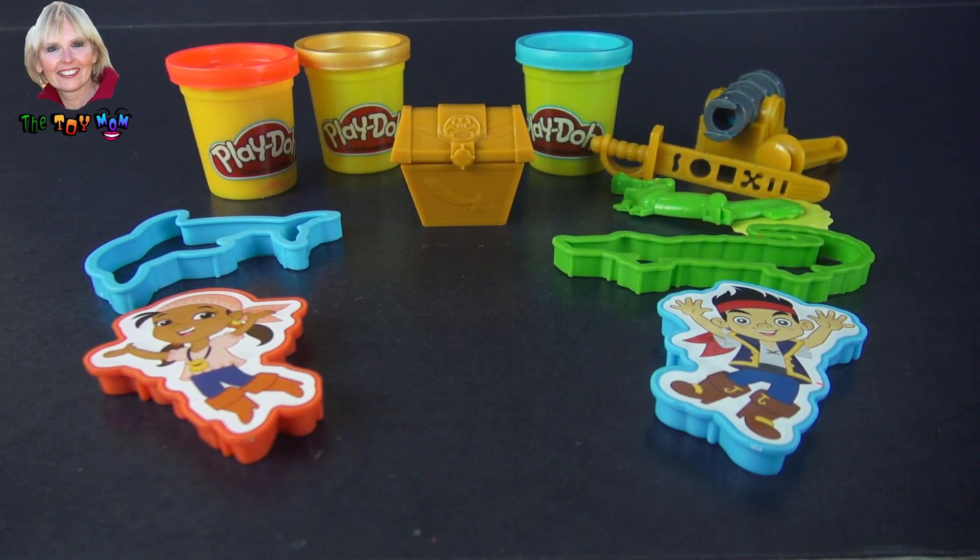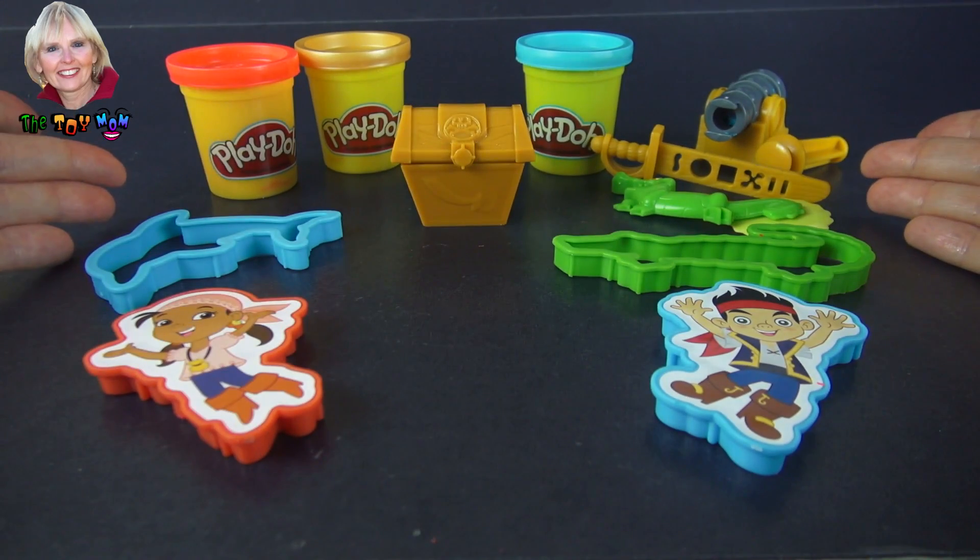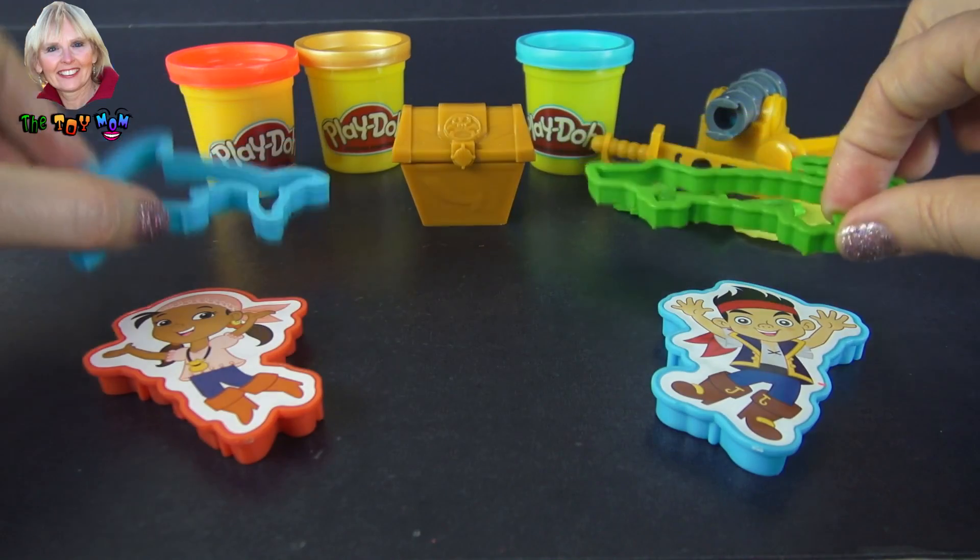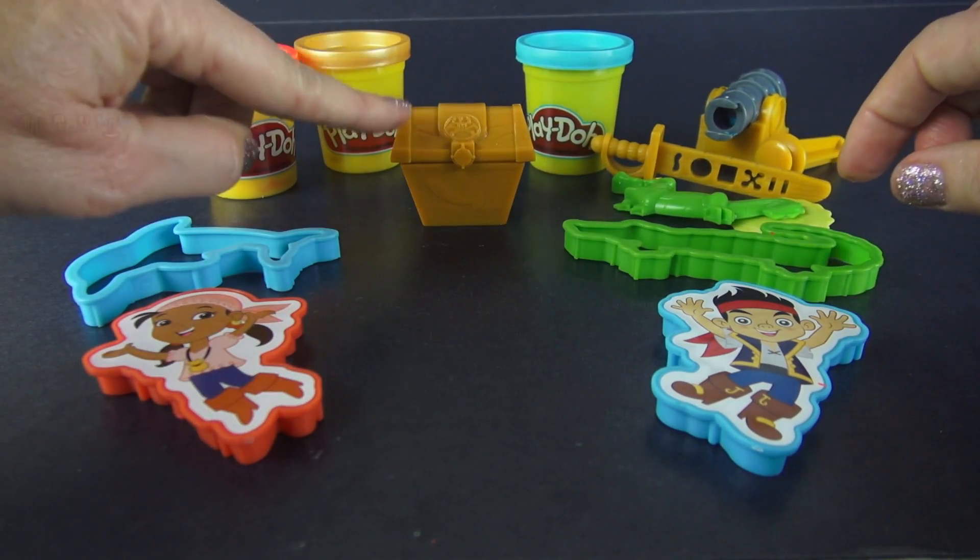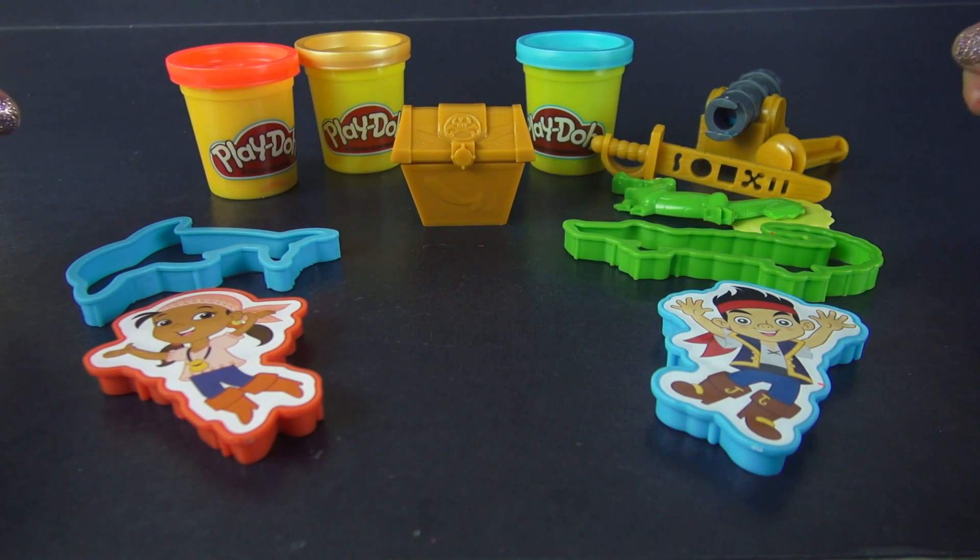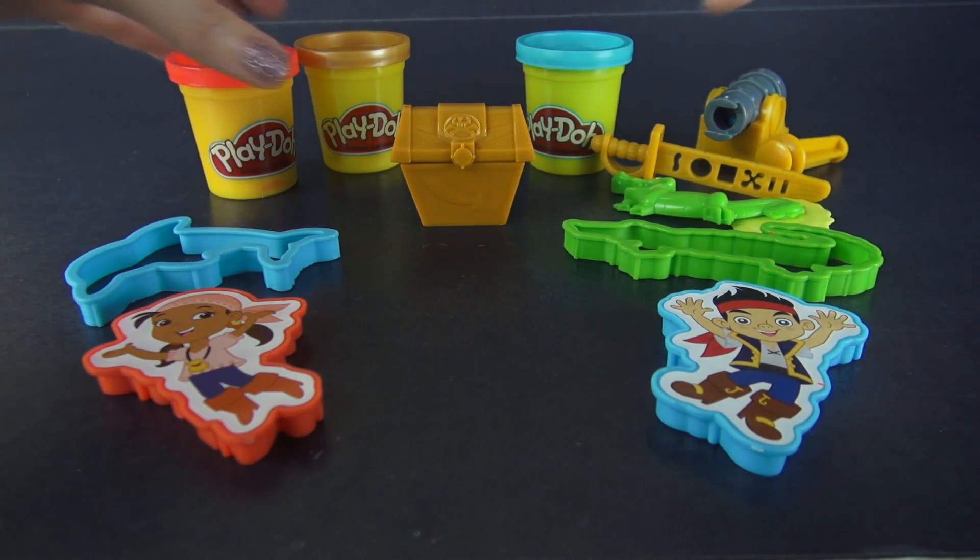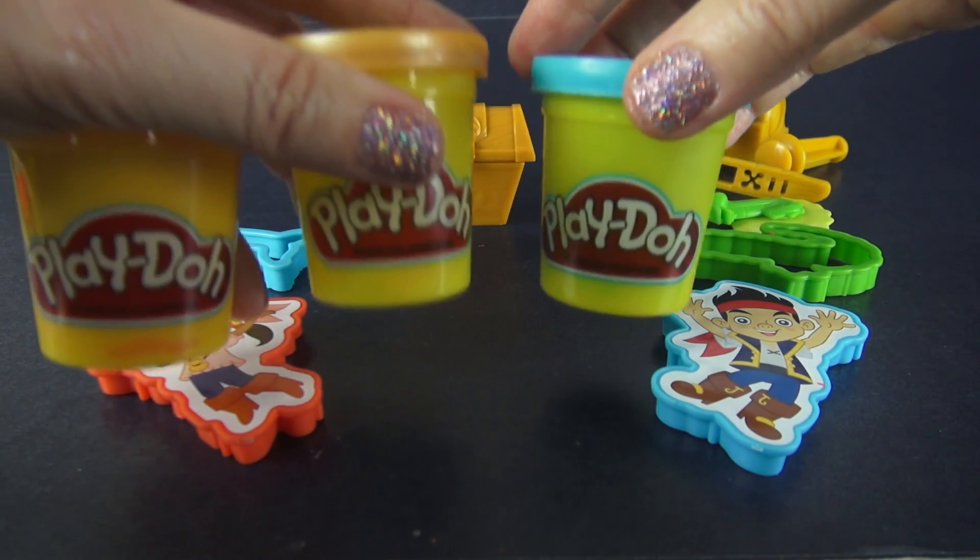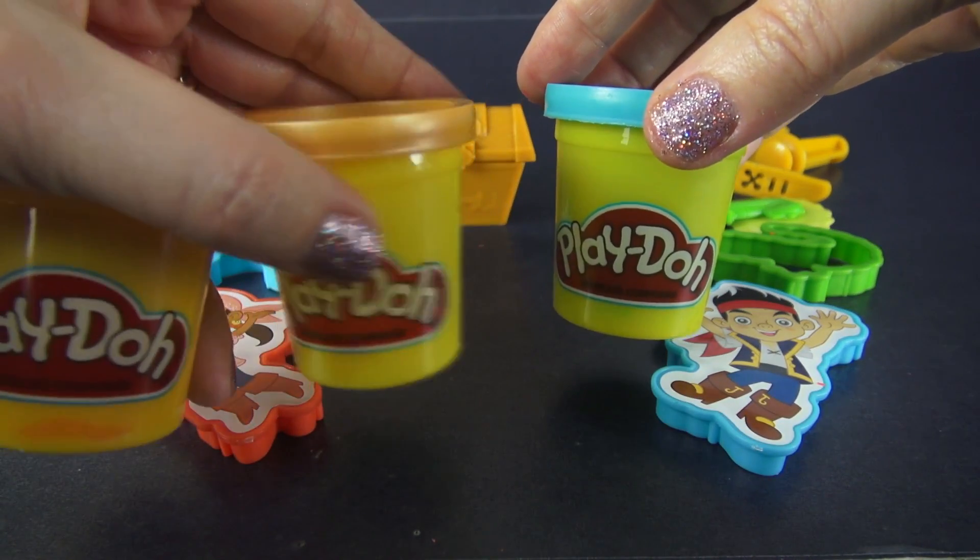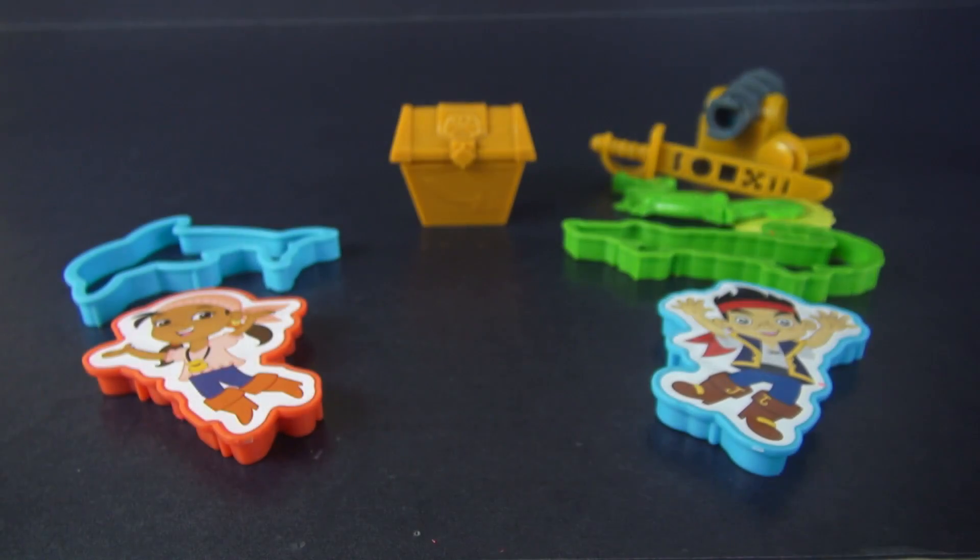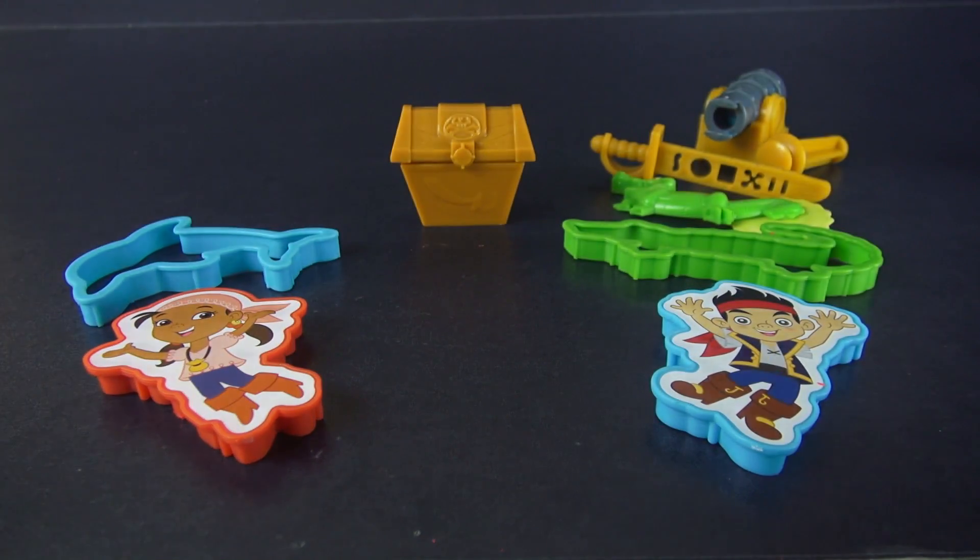Here's our set out of the box and ready to go. We have four flat molds, we have a book mold, we have a cutter, we have an extruder that even has molds on the side. And our set comes with three cans of Play-Doh, and one of them is the sparkly gold. And guess what? We're going to use that for the treasure. So let's get started by making the treasure.